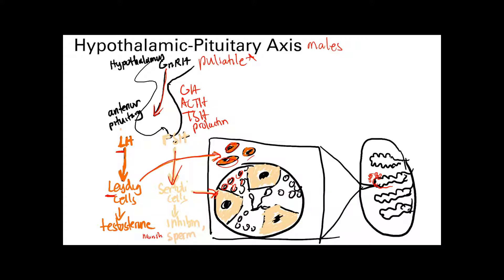Now let's look at feedback inhibition. Testosterone comes back up to the hypothalamus and blocks GnRH secretion; it also goes to the anterior pituitary and blocks both LH and FSH secretion. Inhibin, however, only acts on the anterior pituitary and only blocks FSH secretion — it does not block GnRH secretion. This is a detail you may be tested on.